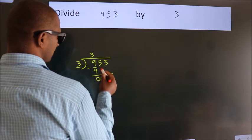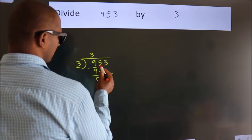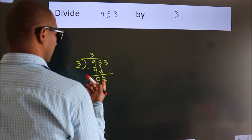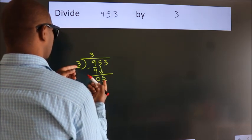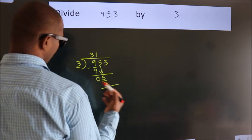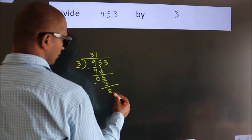After this, bring down the beside number. So, 5 down. A number close to 5 in the 3 table is 3 once 3. Now we subtract. We get 2.